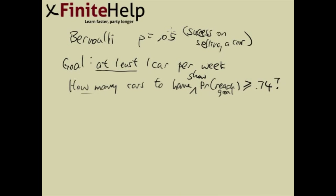Here's one of the hardest Bernoulli problems you'll see, so don't feel bad if you're stuck and you've come here for help. The first thing to understand is the goal: to have at least one car per week sold. We want to know how many cars we need to show — this is the answer we're going to find, and I'm going to call it N.